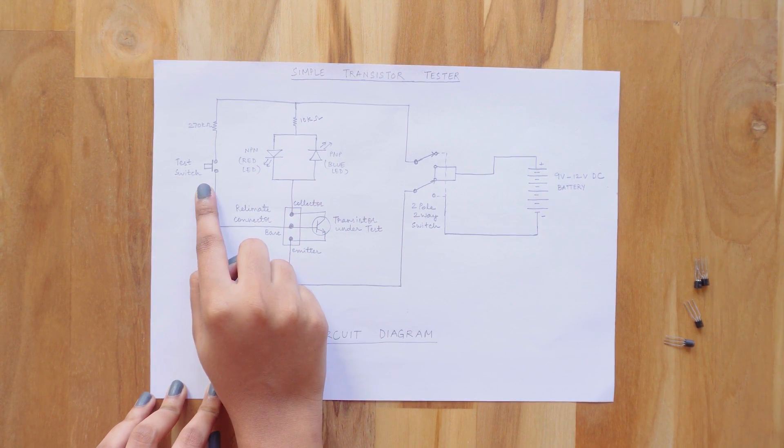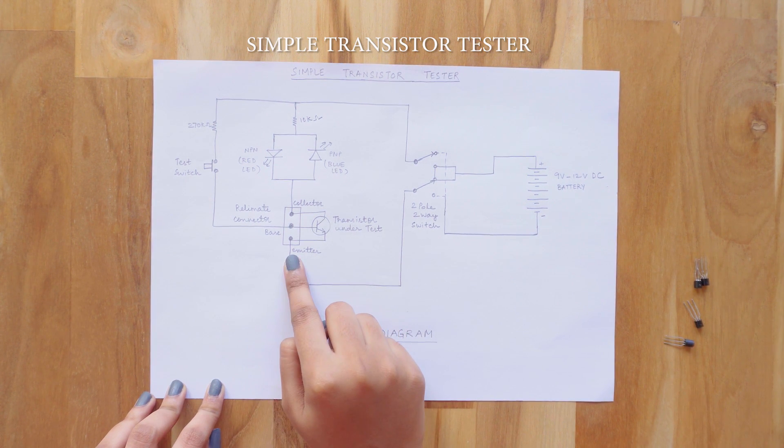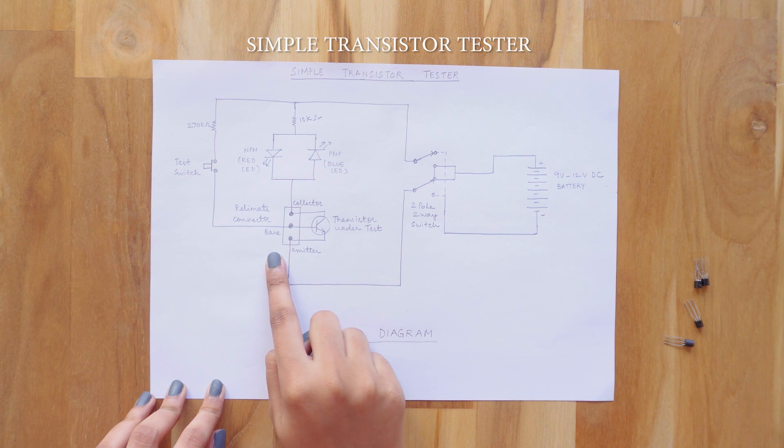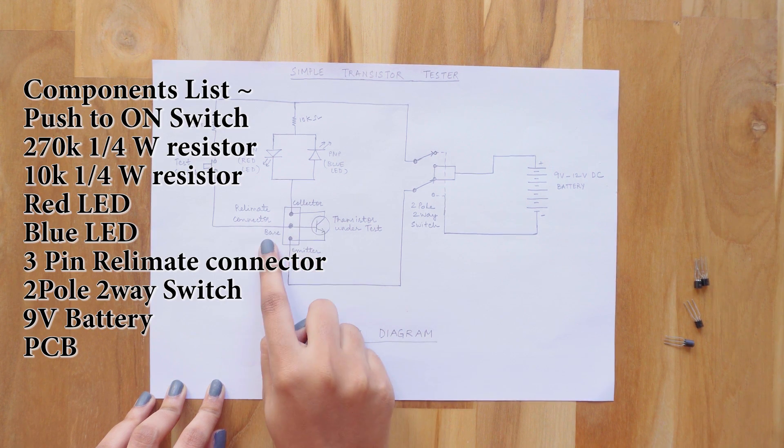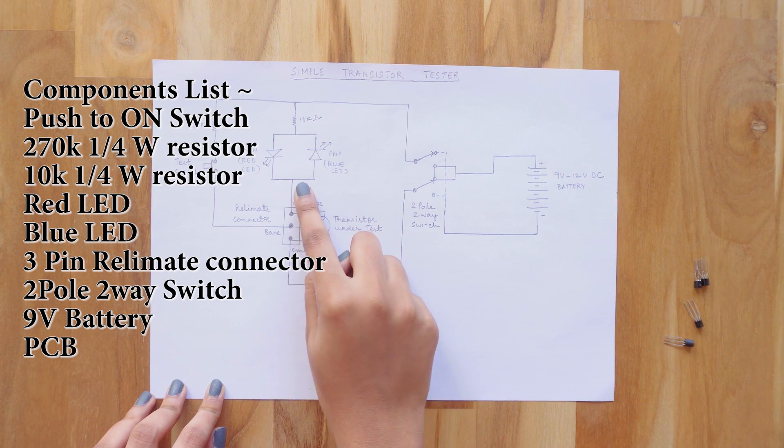This one's the push to on switch which I am using as a test switch. This is a relimate connector in which you place the transistor which you want to check. You can see that I have marked with collector base and emitter so that it's very easy to place the transistor in it.